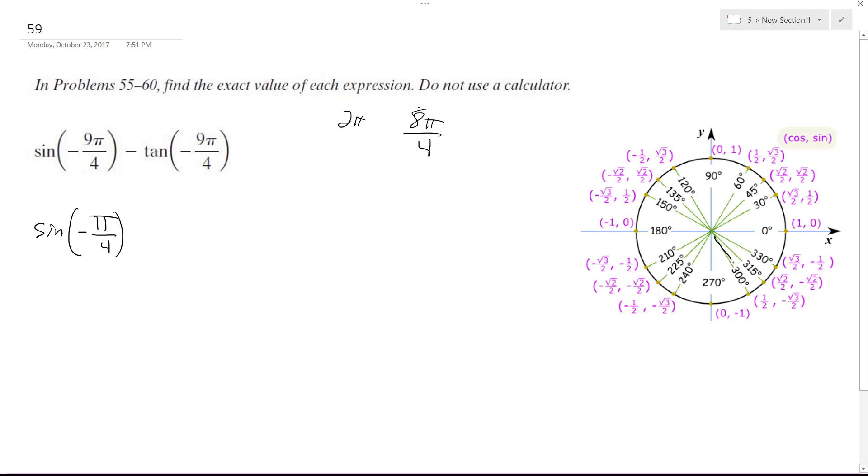And negative π over 4 is the same thing as 315 degrees, so it's right here. And the same thing for tangent, so minus the tangent of negative 9π over 4, or negative π over 4.